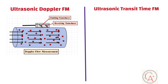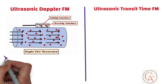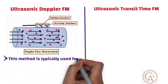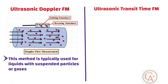Doppler flow measurement relies on the Doppler effect, which involves measuring the change in frequency of ultrasound waves as they interact with moving particles such as suspended solids or gas bubbles within the flowing fluid. The change in frequency is used to calculate the fluid velocity. This method is better suited for liquids with suspended particles or gases, as it relies on the scattering of ultrasound waves by these particles to measure flow velocity.